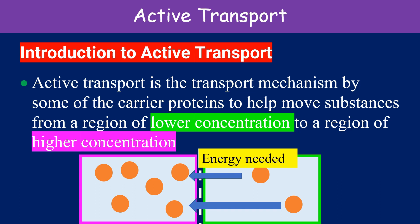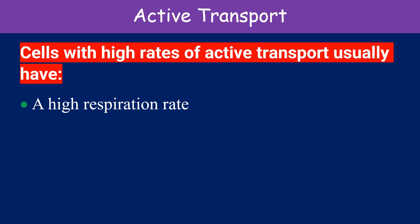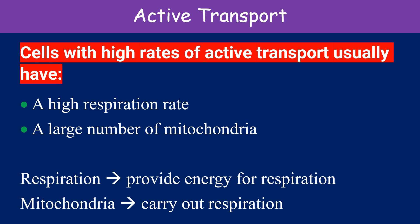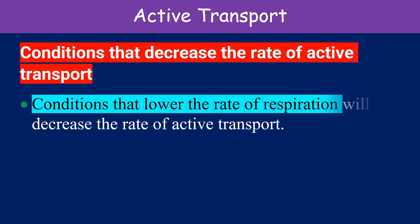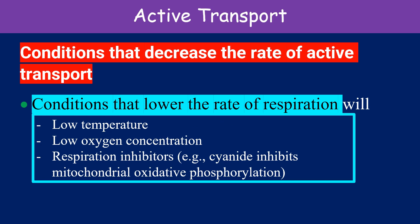Active transport is the transport mechanism by which carrier proteins help move substances from a region of lower concentration to a region of higher concentration, and energy is needed in this process. Cells with high rates of active transport usually have a high respiration rate, as respiration is needed to provide energy for active transport, and a large number of mitochondria, as mitochondria carry out respiration. Conditions that lower the rate of respiration will decrease the rate of active transport — these include low temperature, low oxygen concentration, and having respiration inhibitors such as cyanide, which inhibits mitochondrial oxidative phosphorylation.